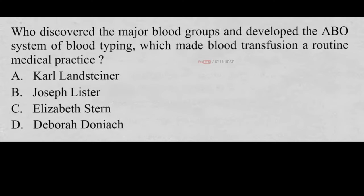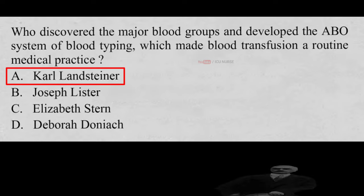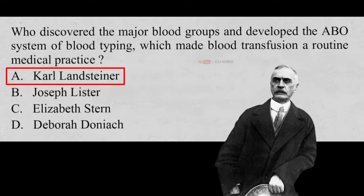Who discovered the major blood groups and developed the ABO system of blood typing, which made blood transfusion a routine medical practice? A. Karl Landsteiner, B. Joseph Lister, C. Elizabeth Stern, D. Deborah Doniak. And the correct answer is A, Karl Landsteiner. Karl Landsteiner developed the ABO blood group system, which made blood transfusion a routine medical practice.